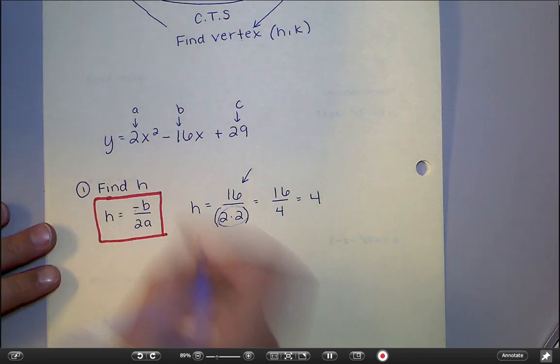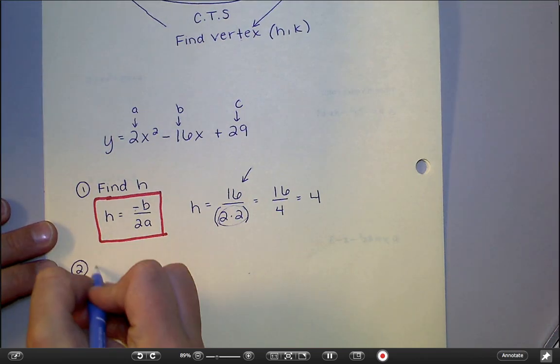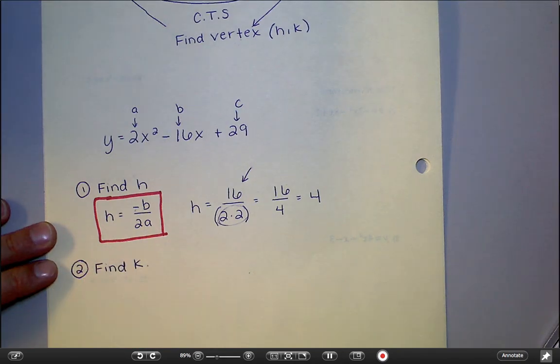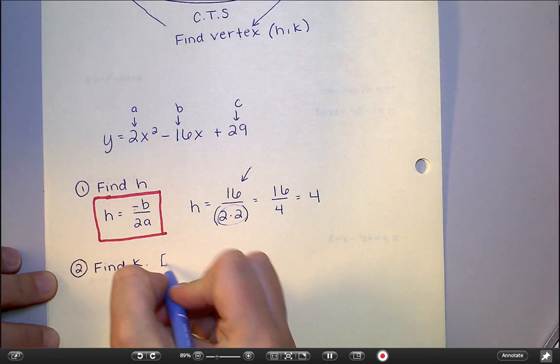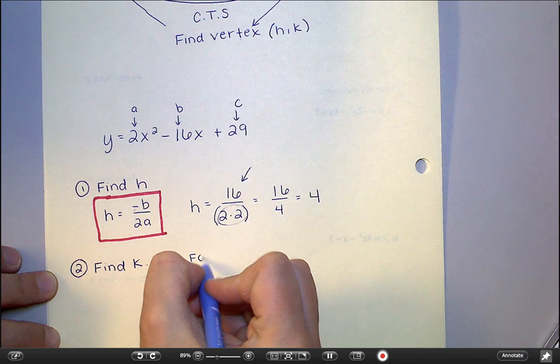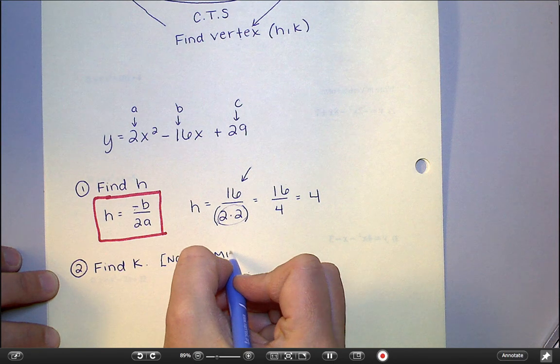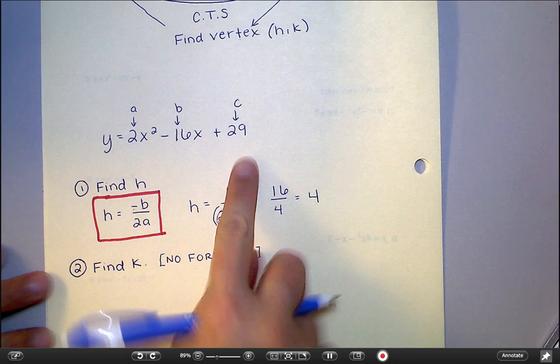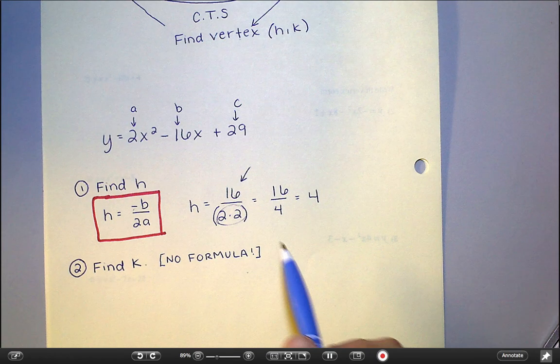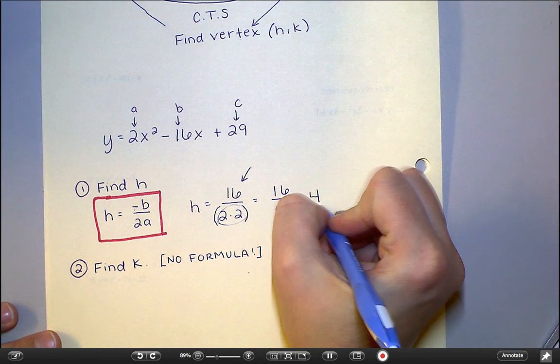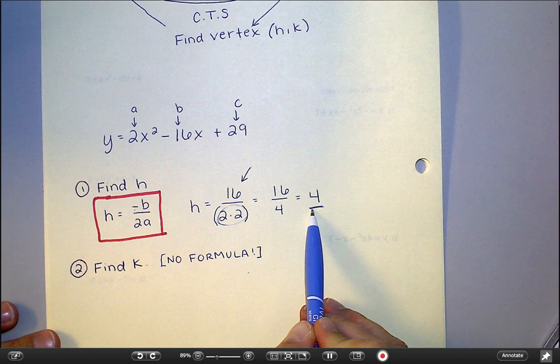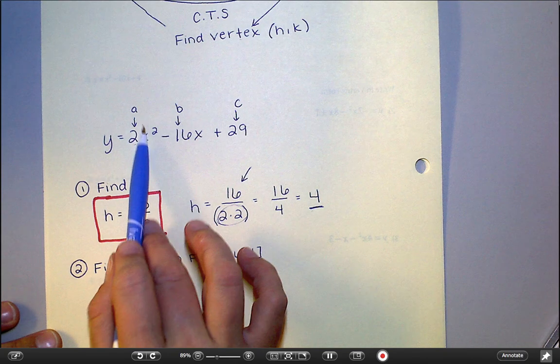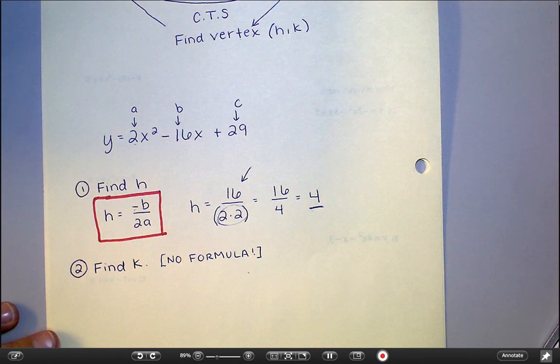So we have our h. Next step, then, is to find k. And k does not have a formula. There is no formula for k. People ask me that question a lot. What's the formula for finding k? The formula is really just the equation you were given in the first place. Because k is just the y value at the vertex, and this is the x value at the vertex. So if I plug this in place of x, if I put this 4 into my equation in place of x, I'm going to get the y value that goes along with it, which is k.